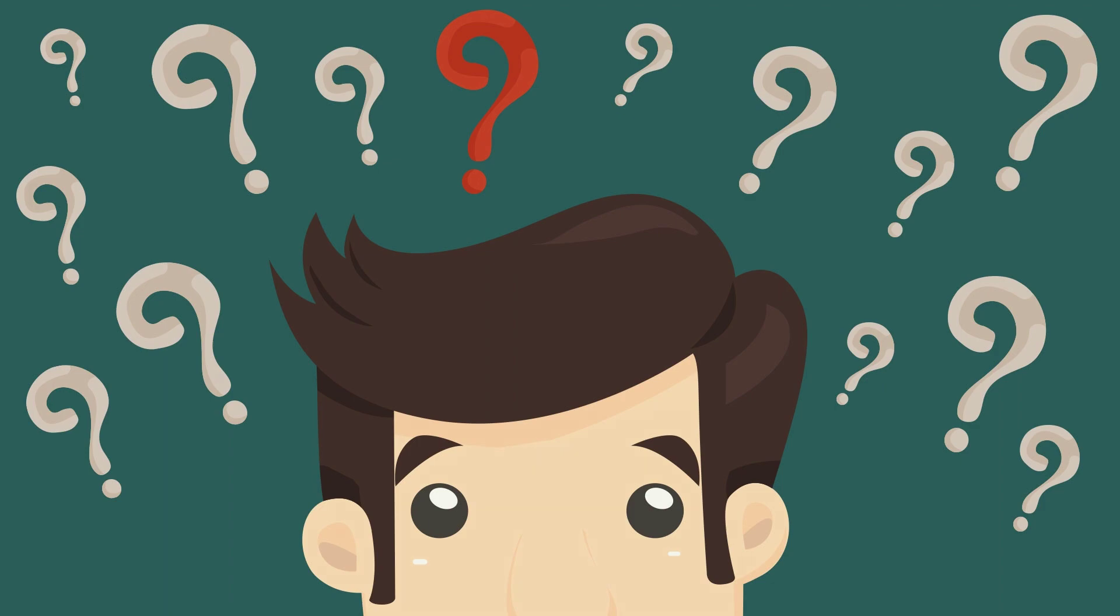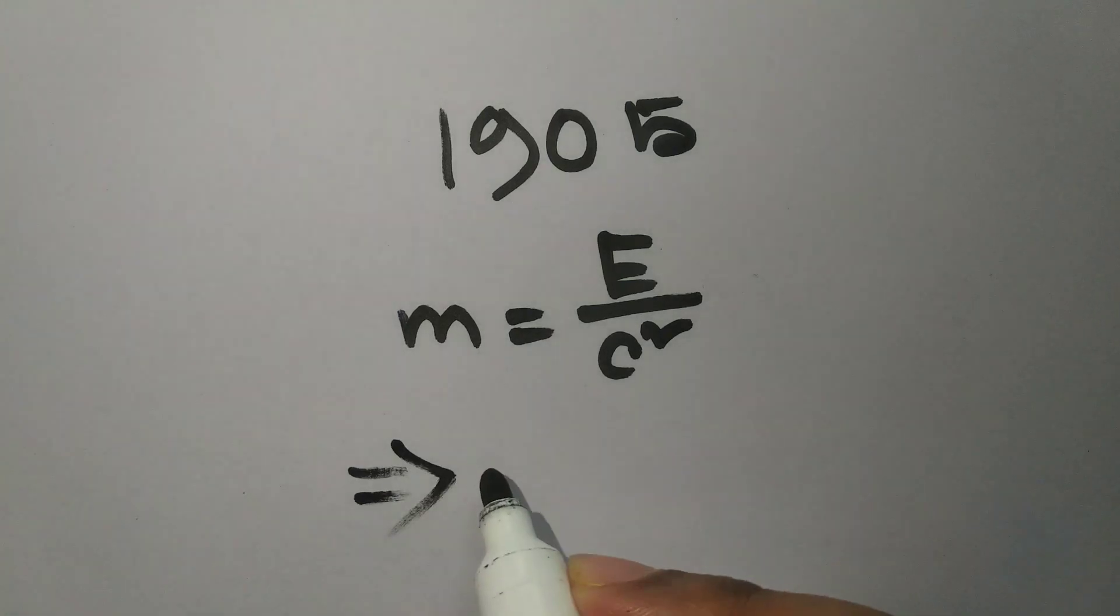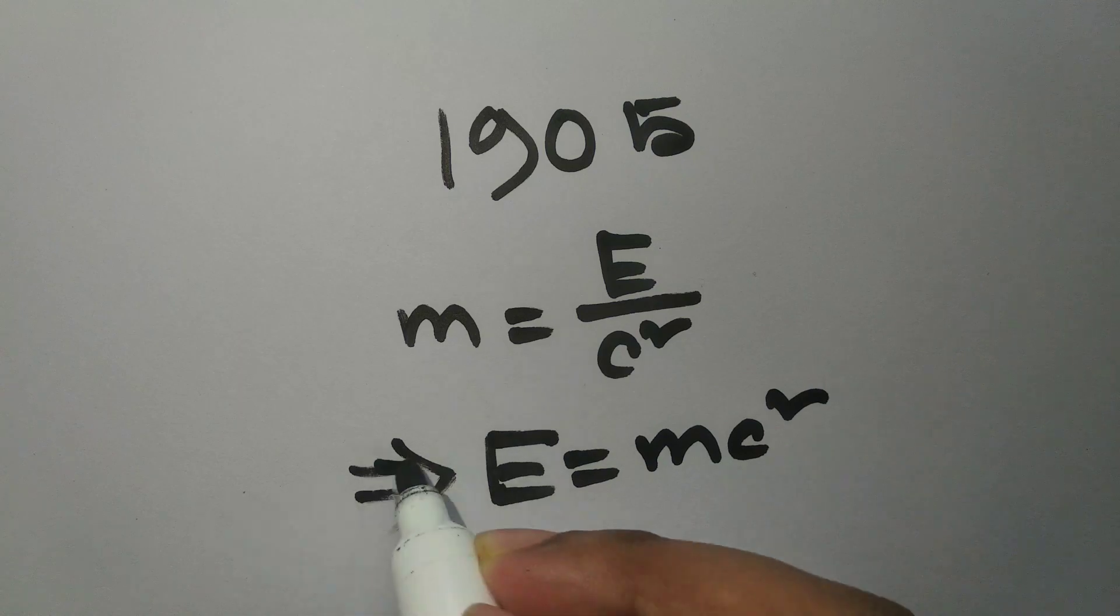I mean, you can rearrange m equals E over c squared to E equals mc squared, and it's still correct, right? Wrong. No, not the equation. Well, let's talk about this.